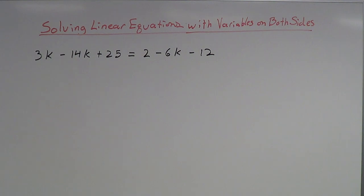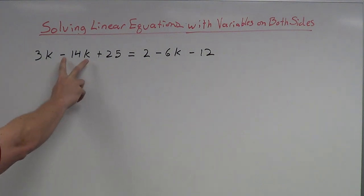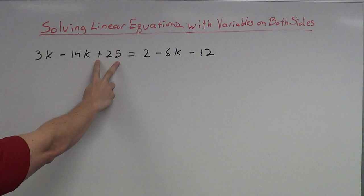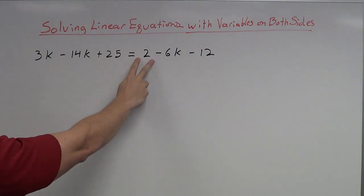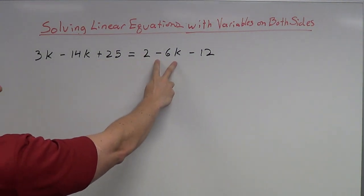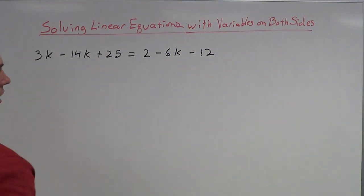In this case, I see a lot of different terms. I see a k term — 3k, negative 14k, there's another k term. Then 25, that's a constant; 2 is a constant; negative 6k, that's a k term; and then negative 12, that's another constant term.